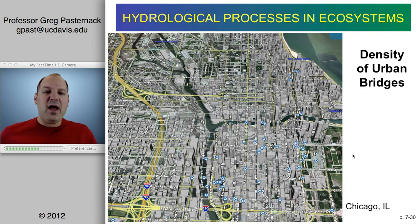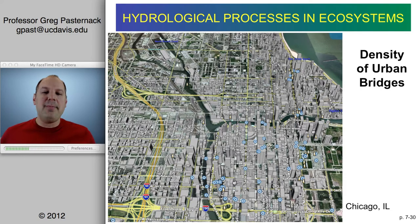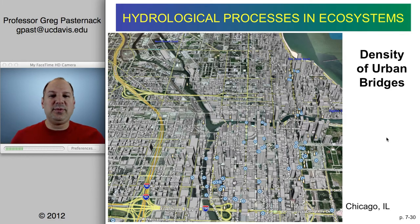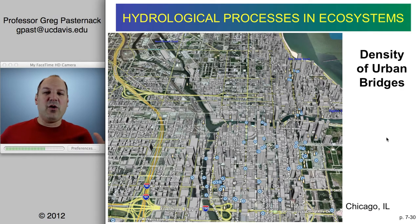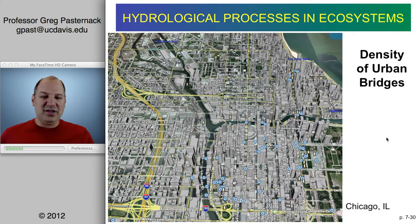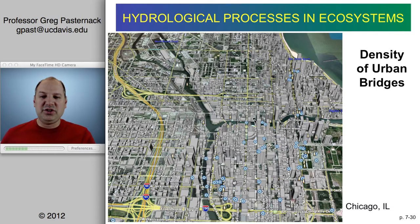Urbanization also results in a massive number of roads crossing rivers. From a societal perspective, we don't want the inefficiency of routing everyone to a few bridges, so every road becomes a bridge. In downtown Chicago you can see how every road just crosses over the rivers as if they aren't even there.